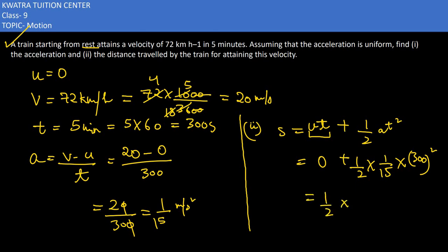Half is there, below we have 15, and 300 square is 9 with 4 zeros. Cancelling by 2, 90,000 becomes 45,000. Dividing 45,000 by 15 gives 3,000 meter. If you want to write the answer in kilometers, you can write 3 kilometers. So that would be the answer for the fifth part.